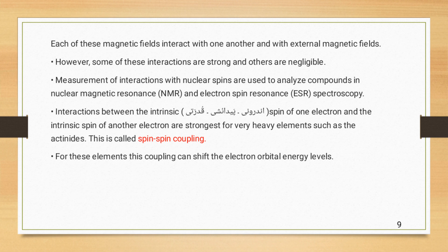Each of these magnetic fields interact with one another and with external magnetic fields. However, some of these interactions are strong and others are negligible. Measurements of interactions with nuclear spins are used to analyze compounds in nuclear magnetic resonance NMR and electron spin resonance ESR spectroscopy.